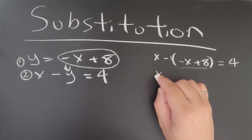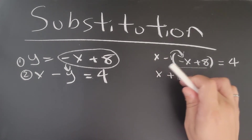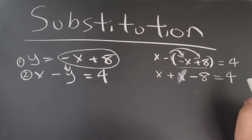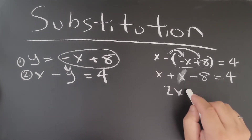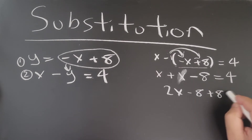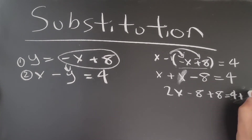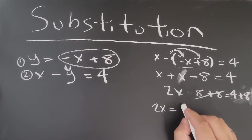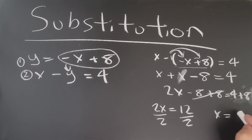We can open up the bracket and we get plus x, because negative times negative is positive. That gives us minus eight, and we are left with four. Now simplifying: x plus x is 2x. We can add 8 to both sides, which gives us 2x equals 12. Dividing both sides by 2, we get x equals 6.